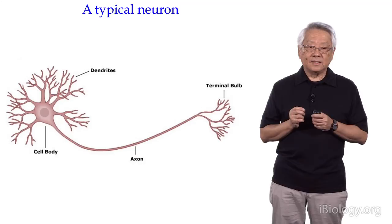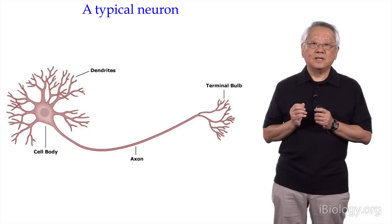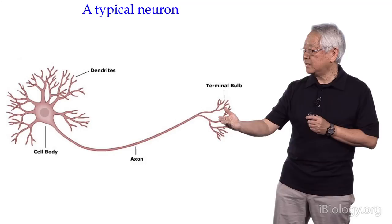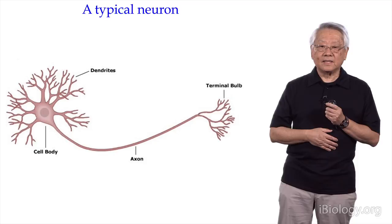There's the cell body, where the nucleus resides. And then the axon propagates the signal from the dendrite toward the axon terminal to release transmitters, which can either inhibit or excite the target cell, depending on the transmitter.